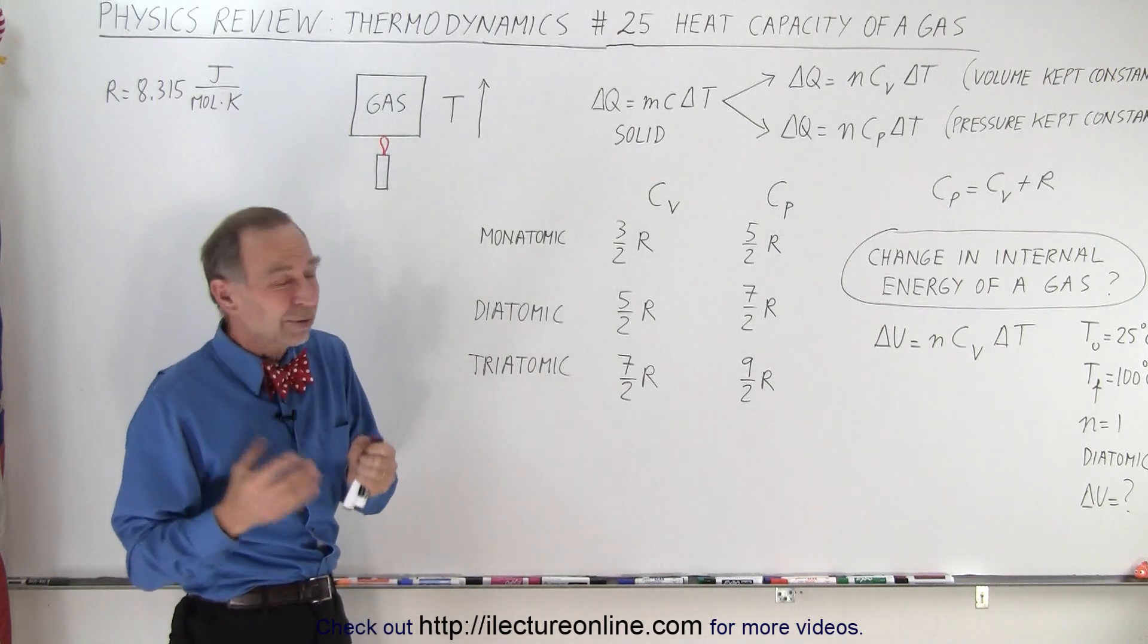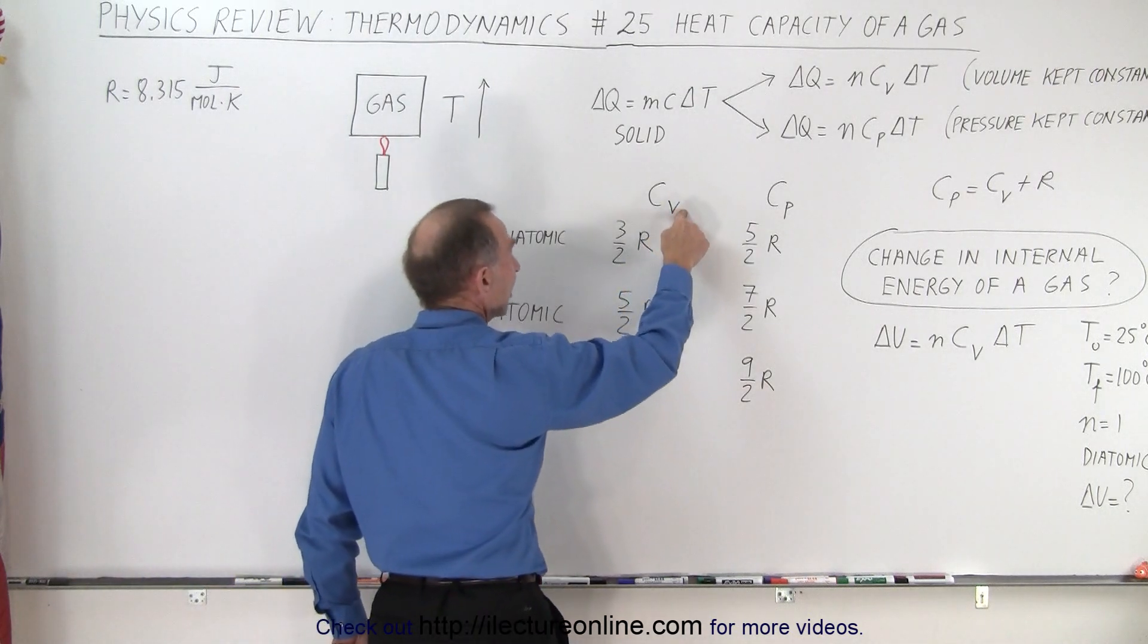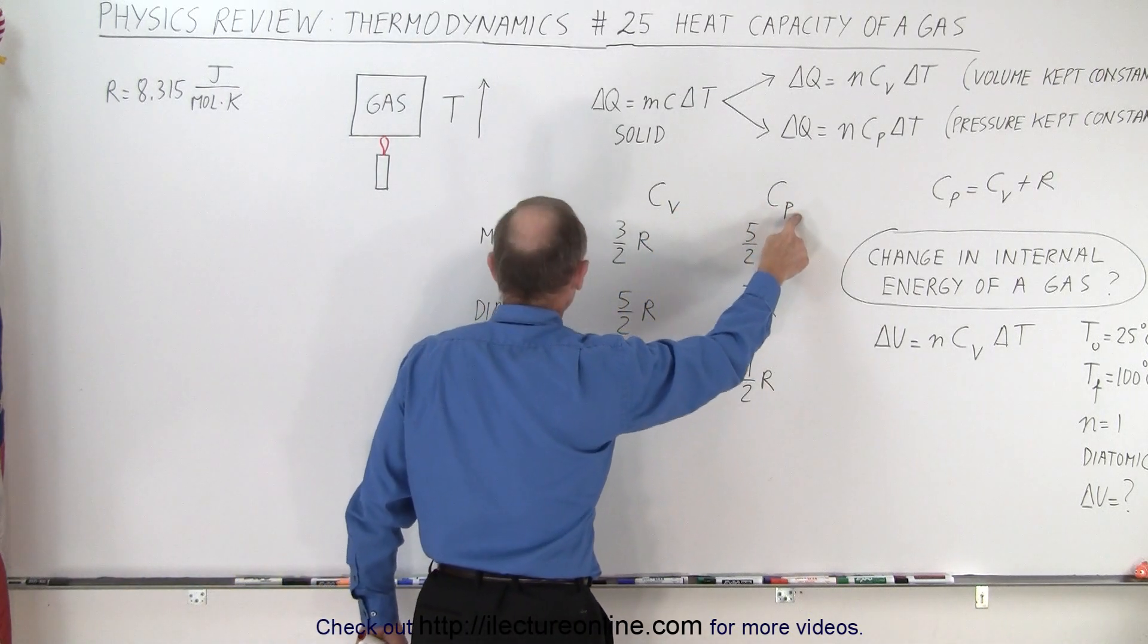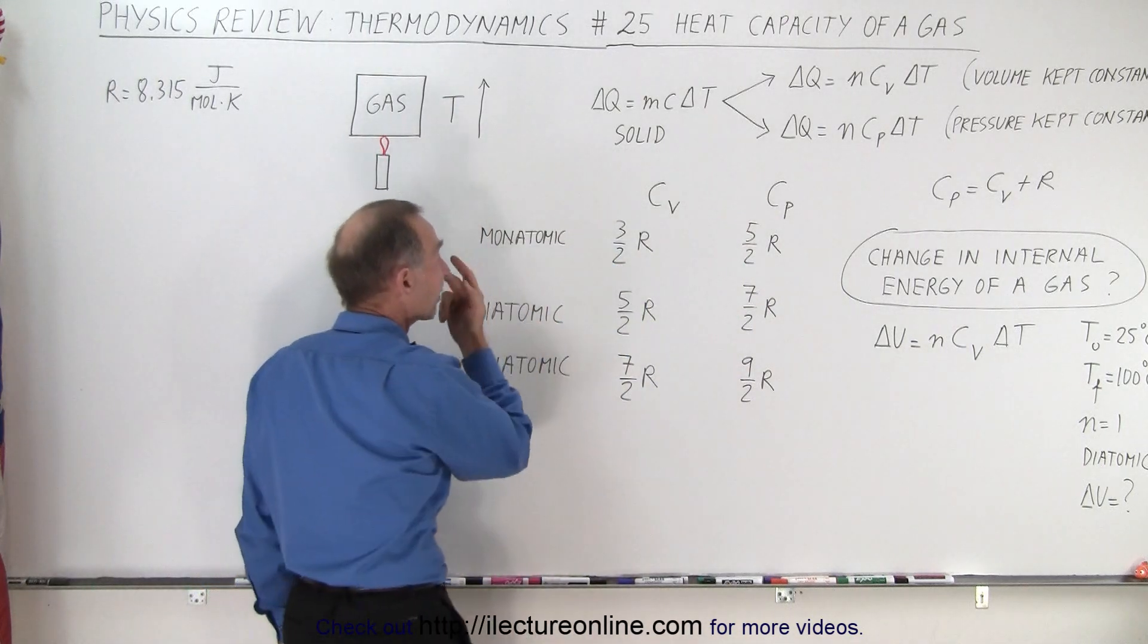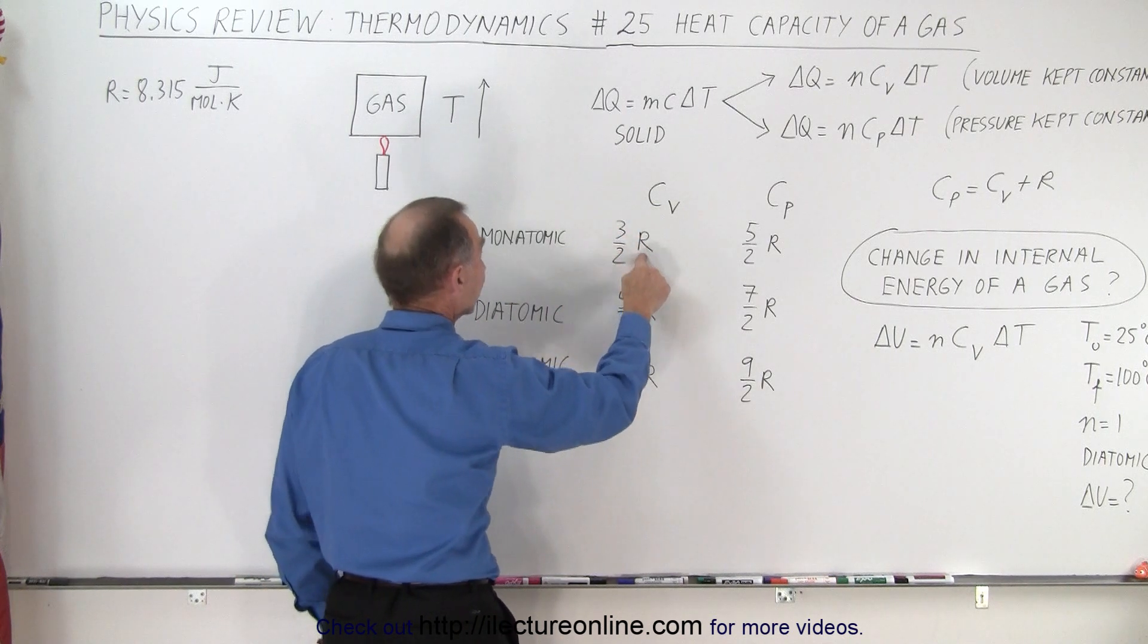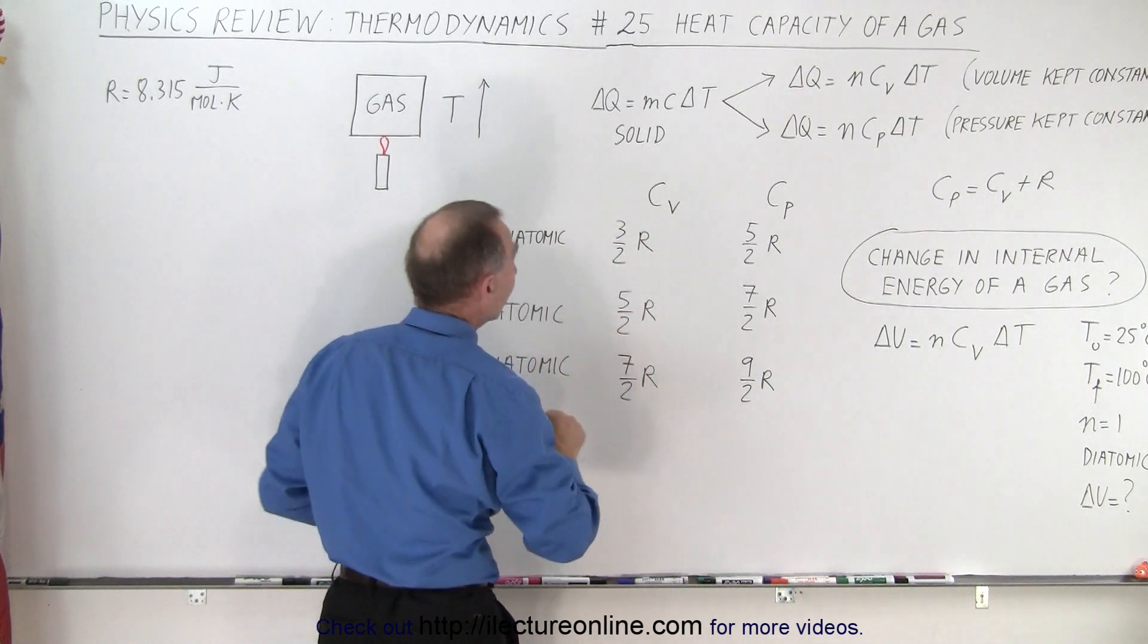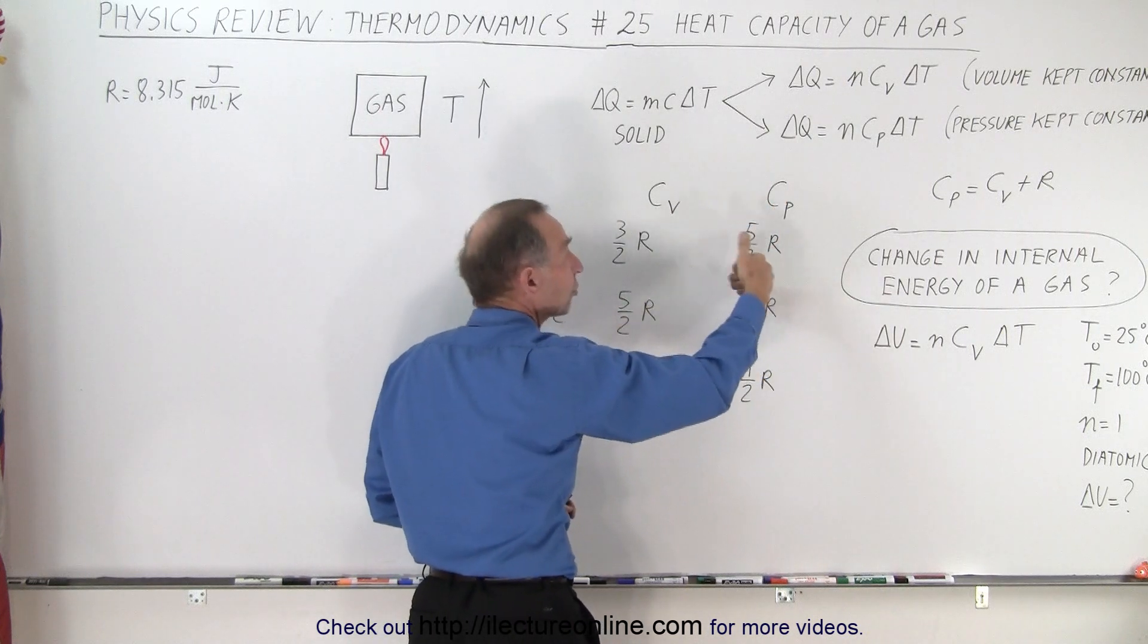So the heat capacities, and that's the general term that they use, depends on whether or not the volume is kept constant, the pressure is kept constant, and what type of gas you're dealing with. And it turns out for a monatomic gas, C sub V, when the volume is kept constant, is 3/2 times the gas constant, which is defined over here. Or when the pressure is kept constant, it requires more heat to change the temperature. It's 5/2 times R.